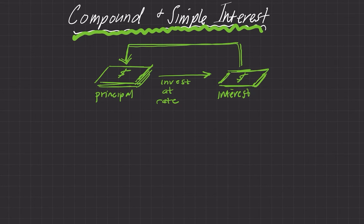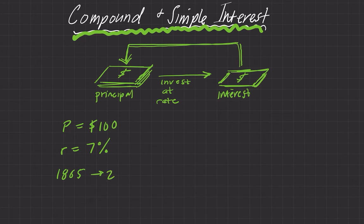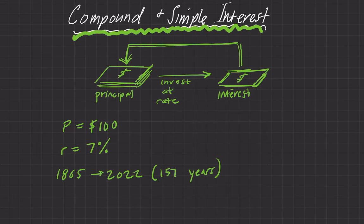So let's keep it simple. Let's say our principal is $100, but let's give a rate of 7% — that's a better kind of average rate. And let's say you do it for 157 years, looking at 1865 to 2022. So imagine in 1865 you put $100 into an investment getting 7% each year. What are you going to have after 157 years?